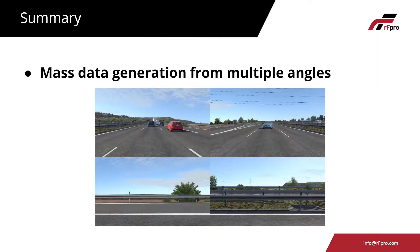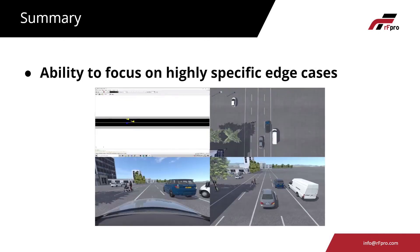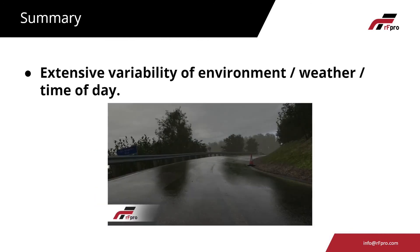In summary, RFPro combined with Sumo provides the ability to mass-generate training data images using multiple sensor types and user-defined sensor locations. It enables the creation of highly specific digital edge cases with multiple huge advantages over traditional real-world data collection. Finally, variability is introduced through environments that are entirely customizable and feature a full range of high-fidelity weather effects and day-night cycles.